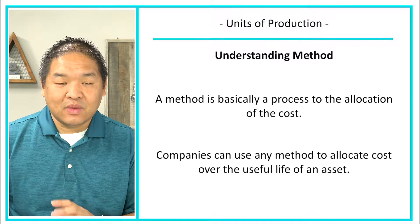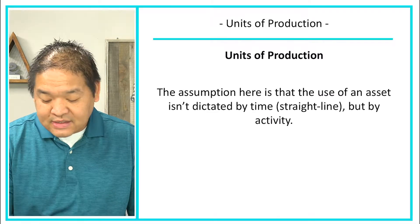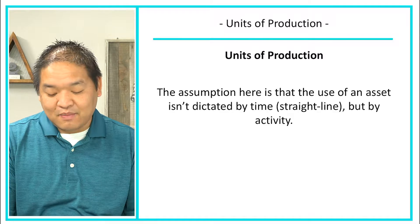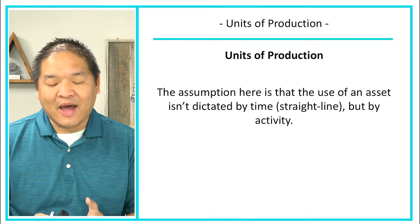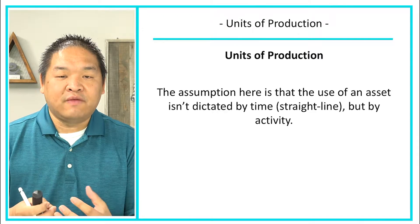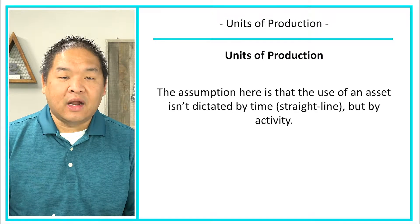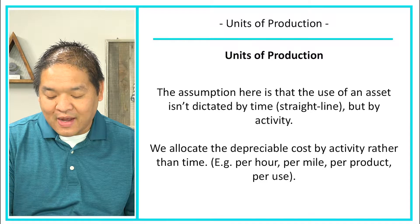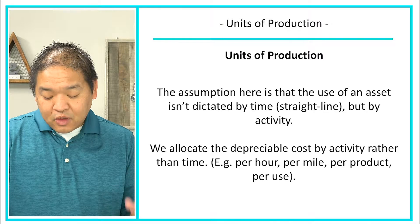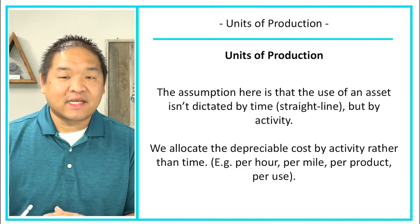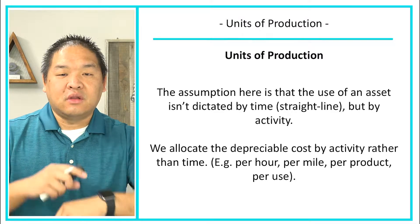In this lesson, we are talking about the units of production method. The assumption here is that the use of the asset isn't dictated by time like the straight-line method is — it is dictated by activity. So the usage of it dictates how much we've used that equipment. We allocate the depreciable cost by activity rather than time. For instance, we can use per hour — but we're not depreciating over constant clock time.